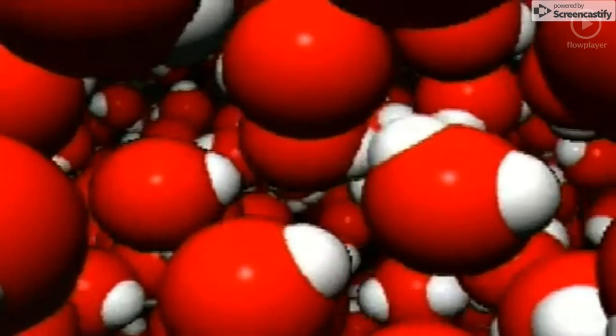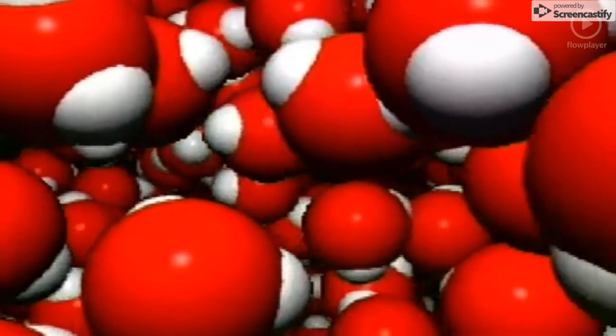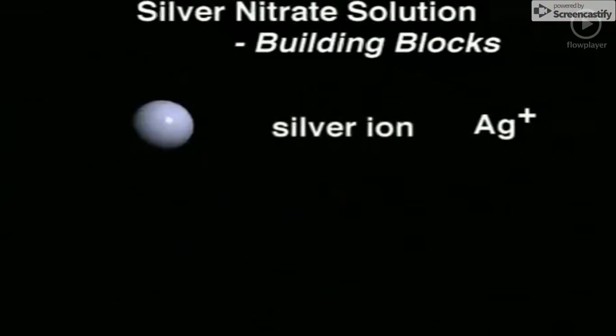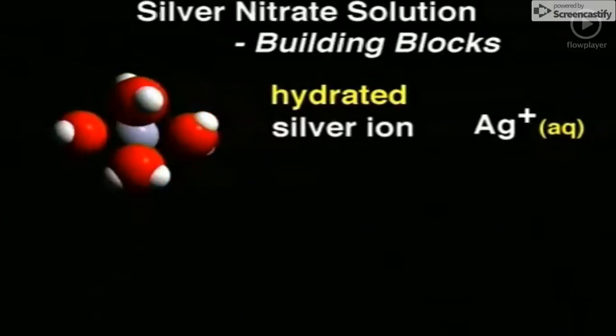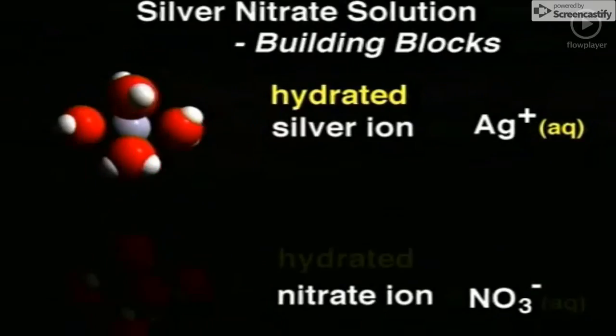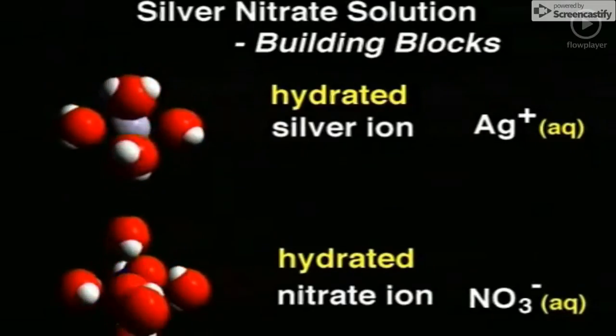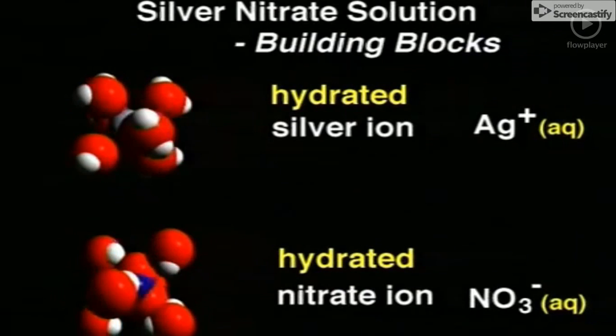But the water molecules then pull them apart. Notice how the oxygen ends of the water molecules point towards the silver ion. The nitrate ion contains a nitrogen atom, here coloured dark blue, with three oxygen atoms, coloured red as usual, bonded to it. Both ions are hydrated in solution.